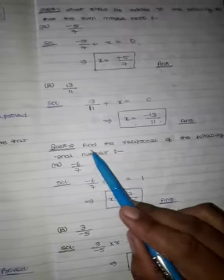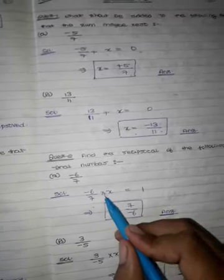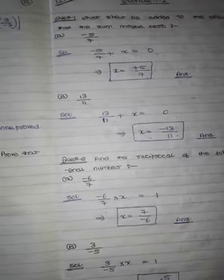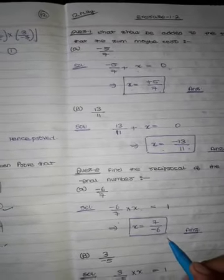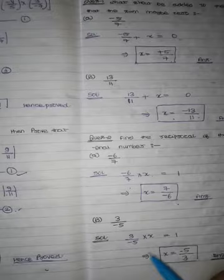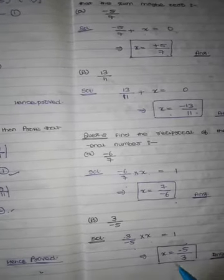Second question: find the reciprocal of the following rational number, minus 6 upon 7. Minus 6 upon 7 multiply x is equal to 1. So x is equal to 7 upon minus 6. We will add 3 upon minus 5, multiply x is equal to minus 3 upon 5.